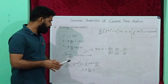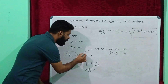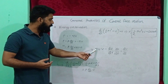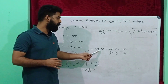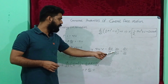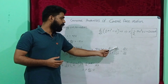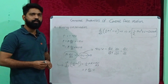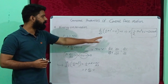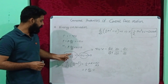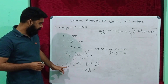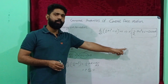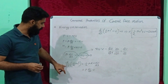Now consider this term delta U dot V. This term can also be rewritten: delta U dot V equals dU by dr dot dr by dt. The dr terms cancel, leaving only dU by dt. So delta U dot V is equal to the differential of U with respect to t.